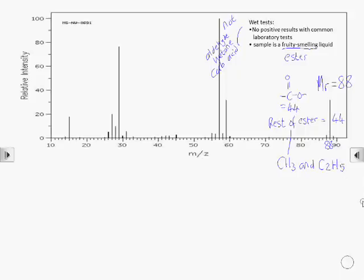Now we need to match the possible fragments of the molecule to the peaks in the mass spectrum. A CH3 would show up at 15, so CH3+ fragment. An ethyl fragment would show up at 29, so that's C2H5+.